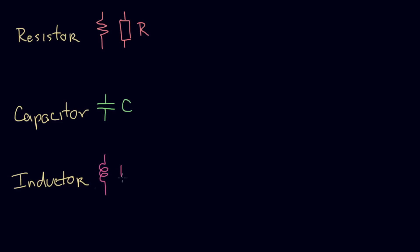The symbol for inductor is L, which is a little odd. It could be called I, but the symbol I was already taken by current — from the French word for intensity. And we couldn't use C for current because C is used for capacitor. So it's a little quirk of our nomenclature.